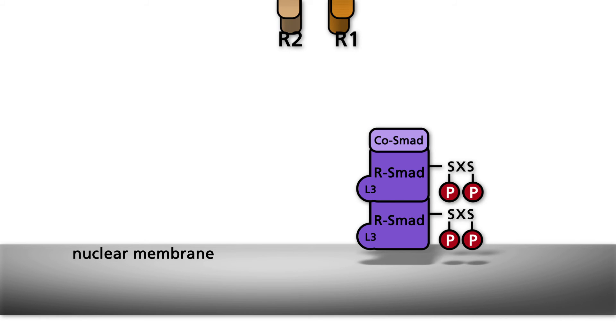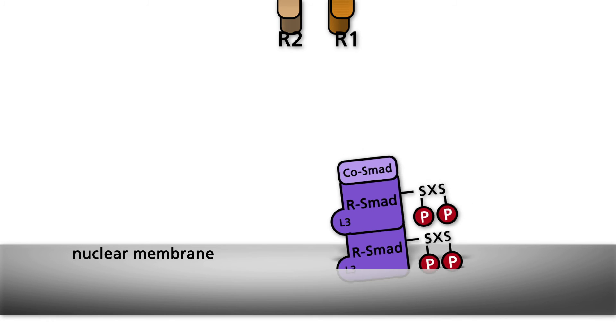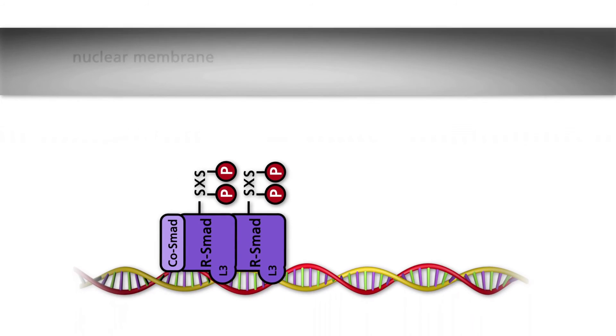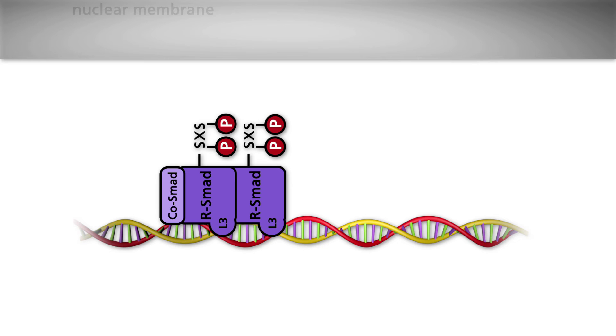The trimeric complex consisting of two R-SMADs and the common SMAD is shuttled into the nucleus. R-SMADs in the trimeric complex bind to specific sequence motifs in the DNA.